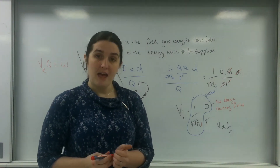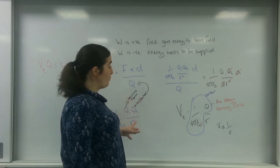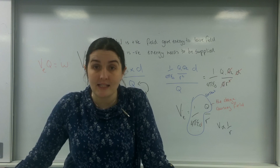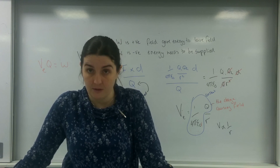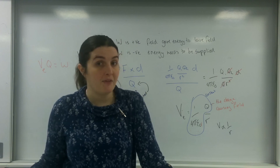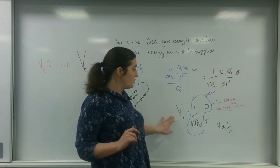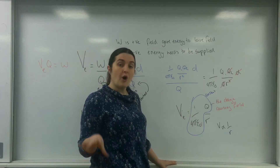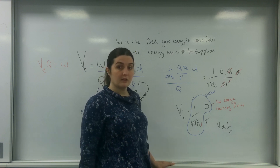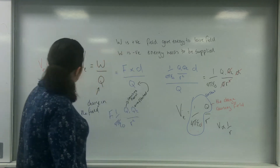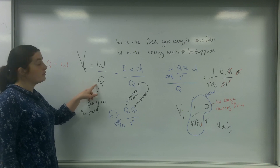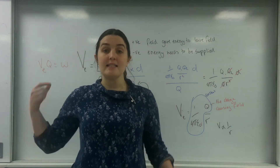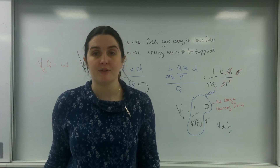So that is the basic formula for potential in a radial electric field. Be aware that this equation gives the potential of the thing causing the field. You can then work out the individual energy of the thing in the field by using the energy formula. That is electric potential in radial fields.